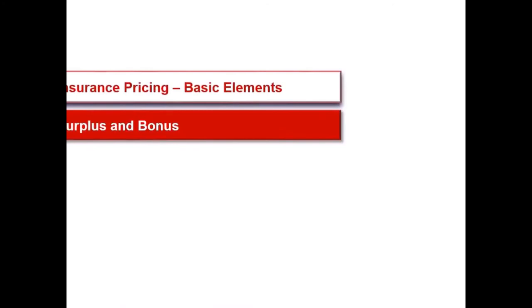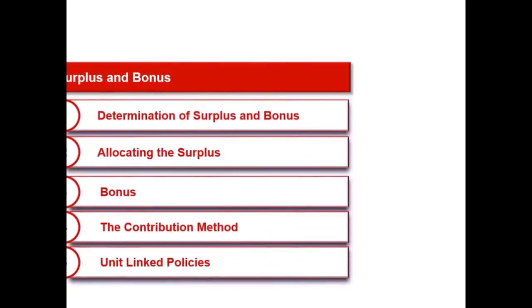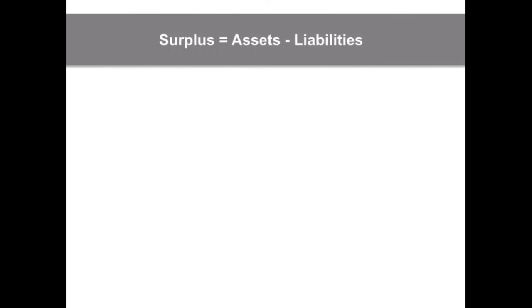In this last video of the lesson, Pricing and Valuation in Life Insurance, we will learn about surplus and bonus and how it affects the insurer and the policyholders. Surplus is the excess of value of assets over value of liabilities. If it is negative, it is known as a strain. Every life insurance company is expected to undertake a periodic valuation of its assets and liabilities.